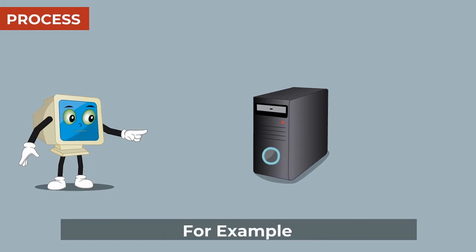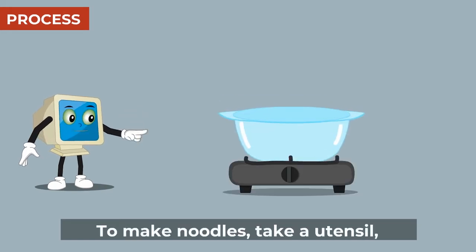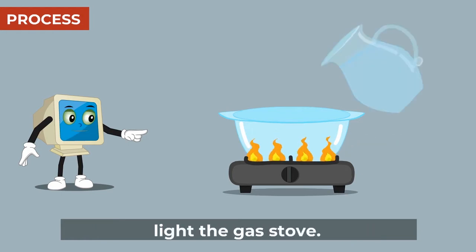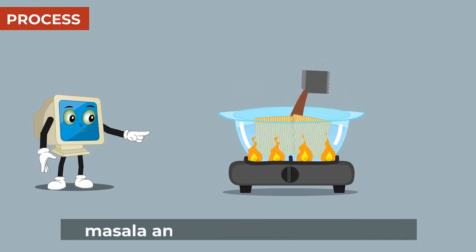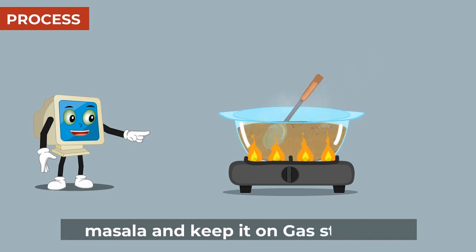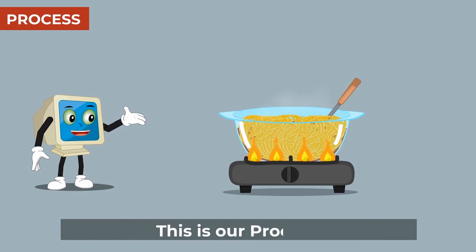For example, to make noodles, take a utensil, light the gas stove. Add water to utensil, add noodles, masala and keep it on gas stove to boil for 5 minutes. This is our process.